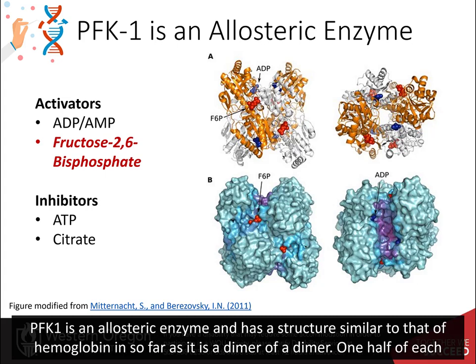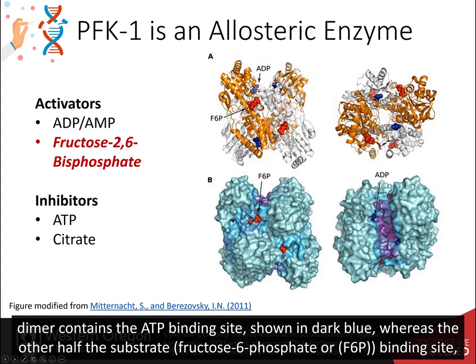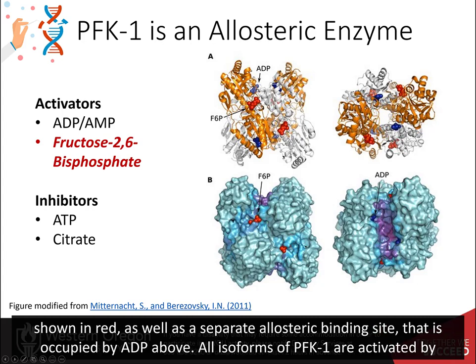PFK1 is an allosteric enzyme and has a structure similar to that of hemoglobin, insofar as it is a dimer of a dimer. One half of each dimer contains the ATP binding site, shown in dark blue, whereas the other half contains the substrate binding site for fructose 6-phosphate, or F6P, shown in red, as well as a separate allosteric binding site that is occupied by ADP.